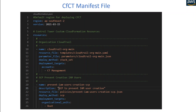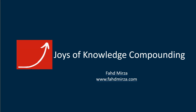The manifest file is highly customizable. As your requirements change and your organizational policies evolve, you can keep adding, editing, or removing resources from this manifest file. Push them to your repo and CFCT will apply them to your whole CloudFormation stack or AWS Control Tower stack. I hope that was helpful. If you have any questions or feedback, please put them in the comments. Thank you very much.